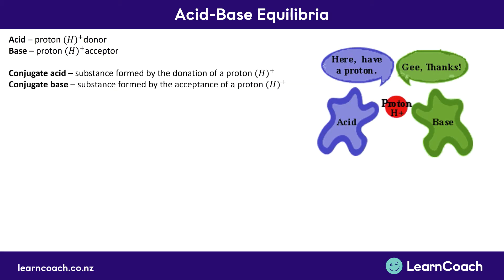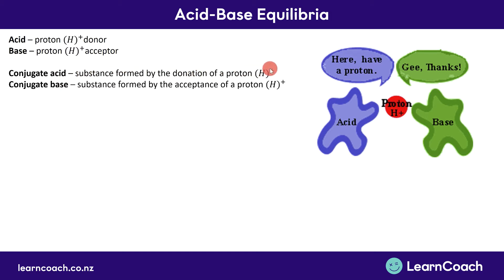Moving forward to the level 3 acid-base equilibria. Acids are proton donors and bases are proton acceptors. Some new terms for level 3 are conjugate acid and conjugate base. A conjugate acid is a substance formed by the donation of a proton, and a conjugate base is a substance formed by the acceptance of a proton.